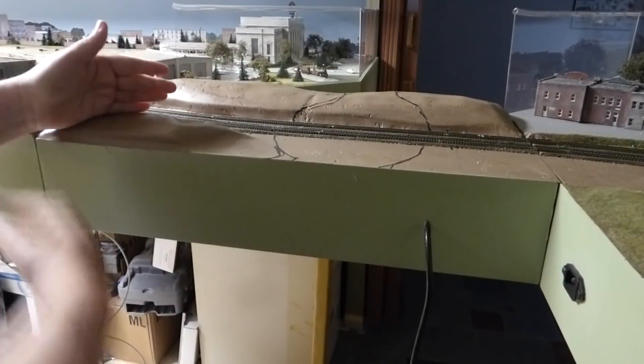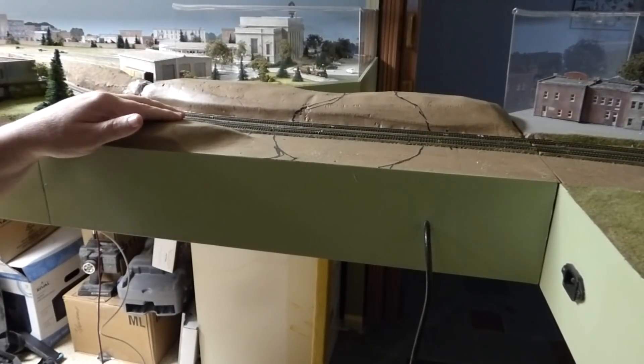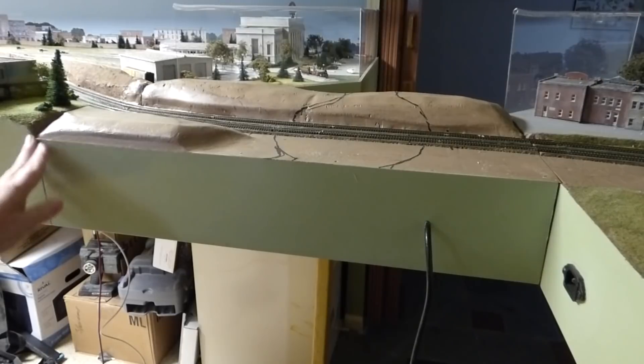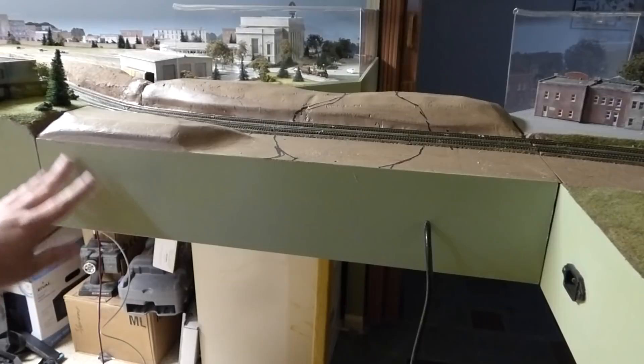So I want to rework this and make it a hinged drop-down bridge. I want to hinge it on this side and then let it drop down and go right up underneath the layout here, out of the way.